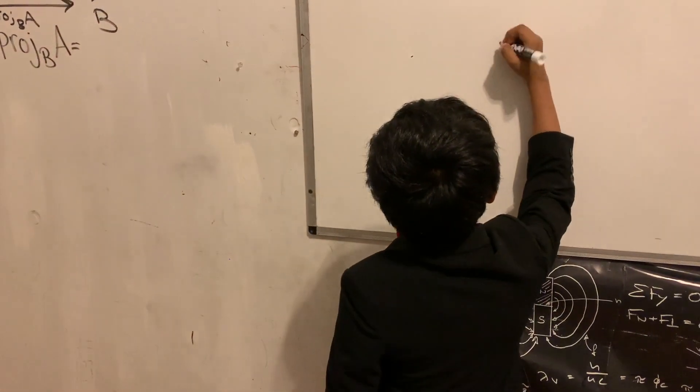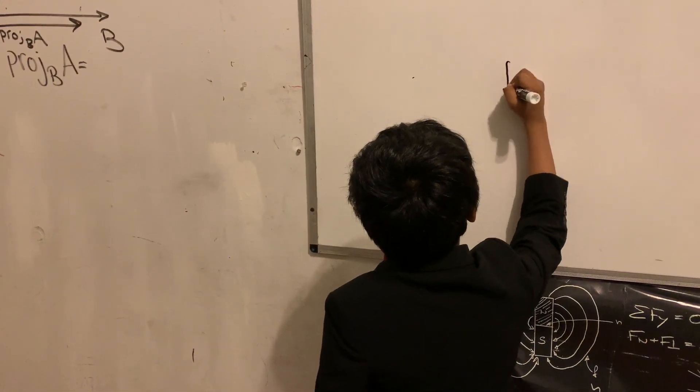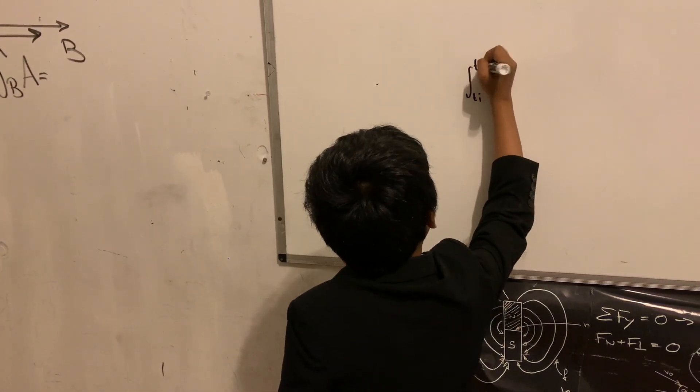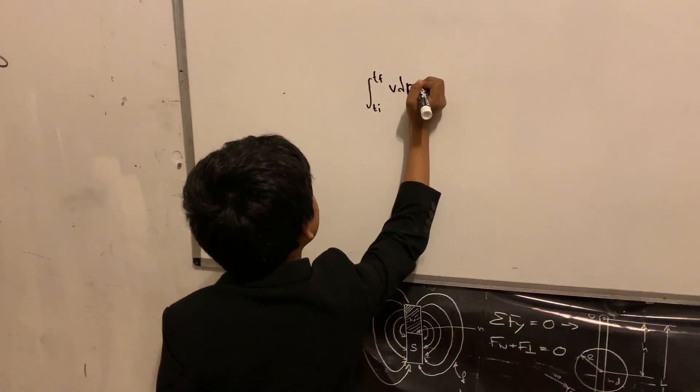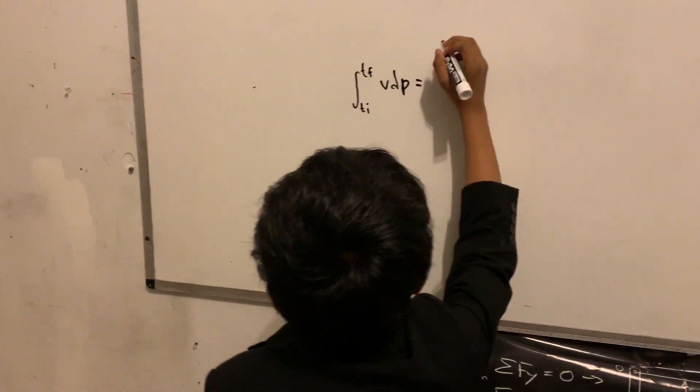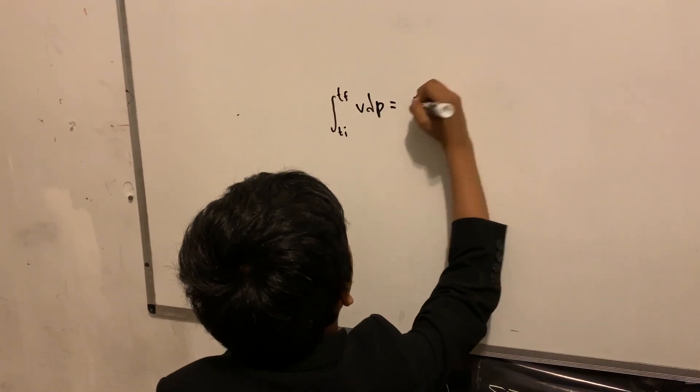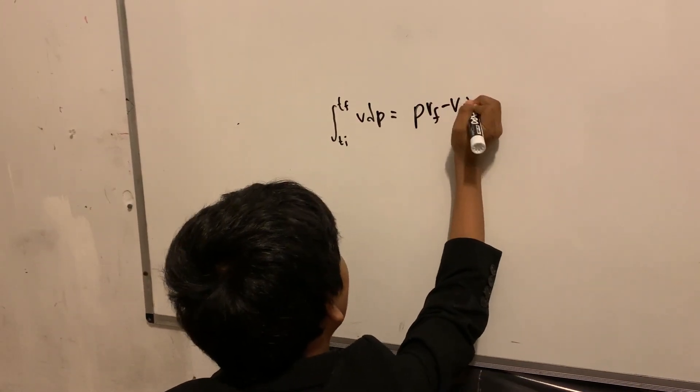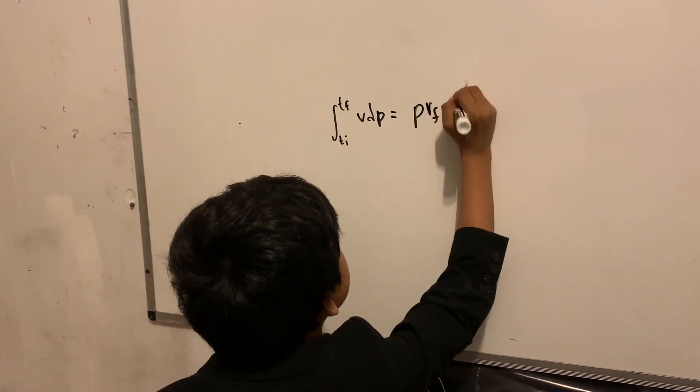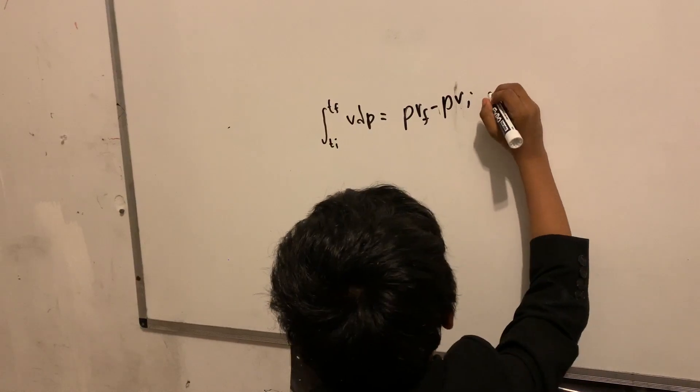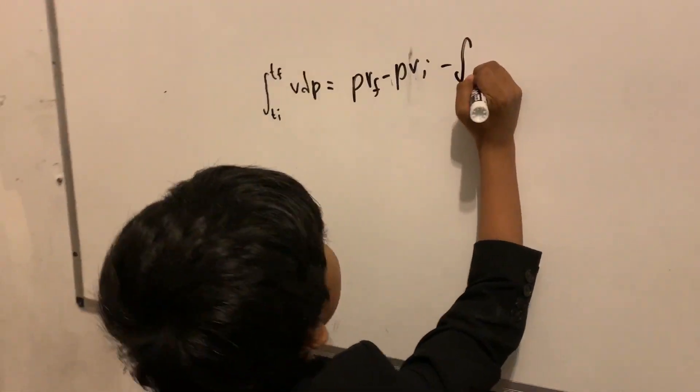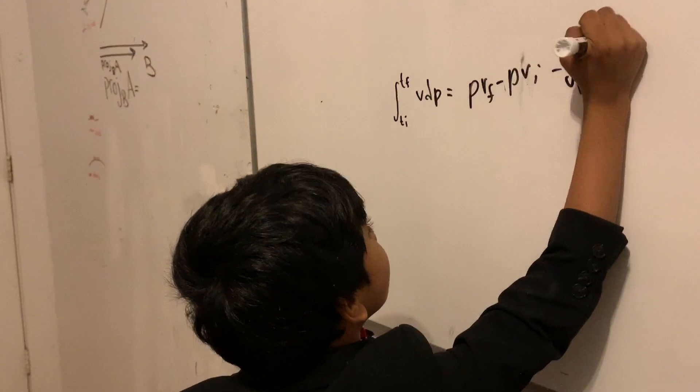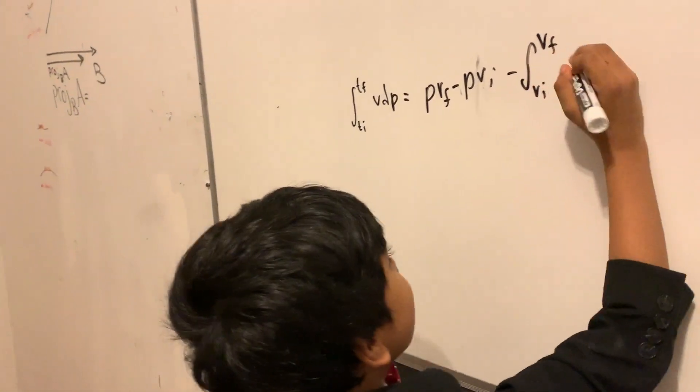So anyways, I believe where we left off looked like this. Ti to Tf, VdP is equal to PVF minus PVI minus integral VIVF and then we had PdV.